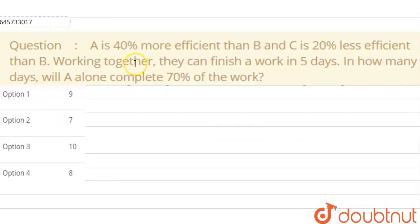Hello everyone, the question is A is 40% more efficient than B and C is 20% less efficient than B. Working together, they can finish a work in 5 days. In how many days will A alone complete 70% of the work? Okay, listen.